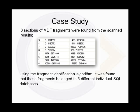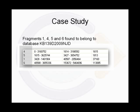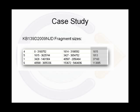Eight sections of fragments have been found, and these have been shown to come from five different databases. One of these databases is that required by the customer. After further analysis, it has been found that fragments 4, 5, 1, and 6 belong to the database required, and that fragment 4 is the first fragment. Totalling the size of all the fragment sections indicates a database size of approximately 1.2GB, which matches the size specified by the customer.